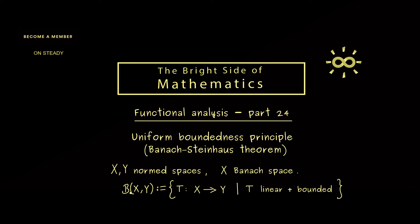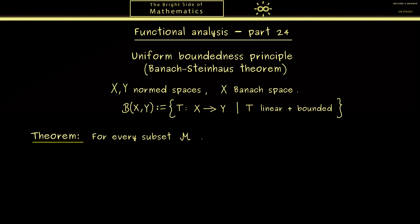Now with the definitions out of the way we are able to state the theorem. We can look at an arbitrary subset in the bounded operators. I call the set M and of course it's just a collection of operators from X to Y. Now for M we have the equivalence that it is bounded pointwise on X if and only if M is uniformly bounded. If this does not make any sense to you that's totally fine because we first have to explain all the words here.